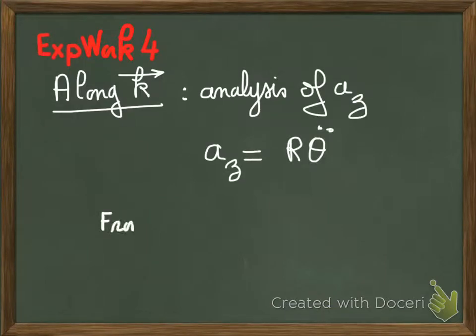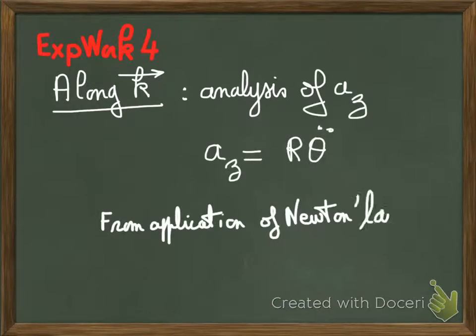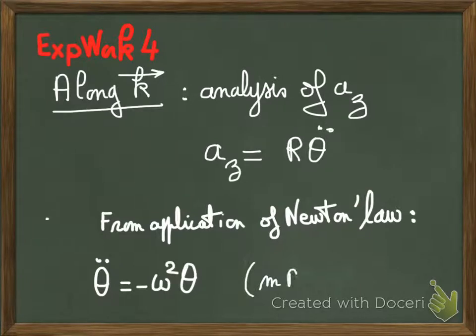That's the analysis of AZ along the k vector, perpendicular to the plane of the pendulum. What we would like to see is that AZ behaves like R theta double dot, that is the second derivative of the angle versus time.